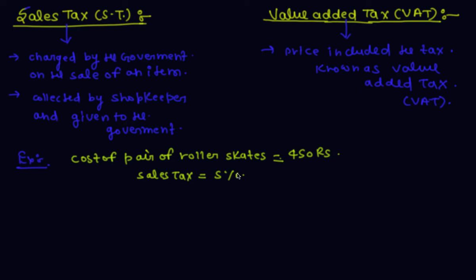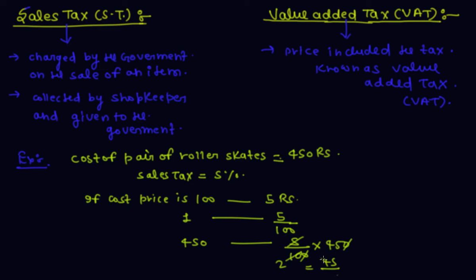To find bill amount, if cost price is 100 rupees, then tax is 5 rupees. When cost price is 1 rupee, then sales tax is 5 upon 100. And when cost price is 450, then sales tax is 5 upon 100 into 450, which equals 22.5 rupees.